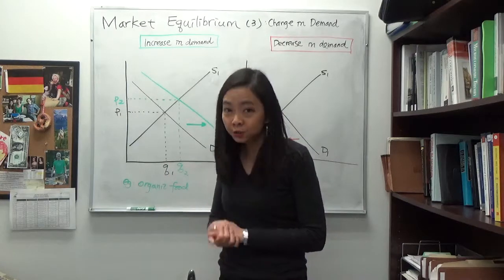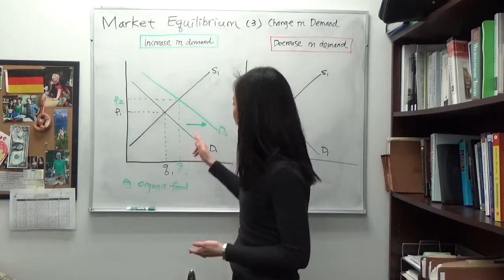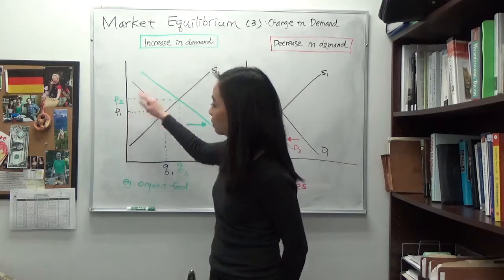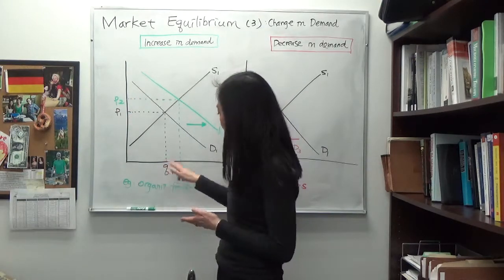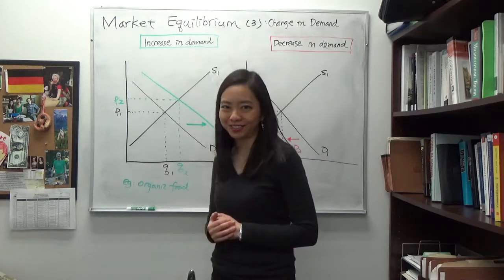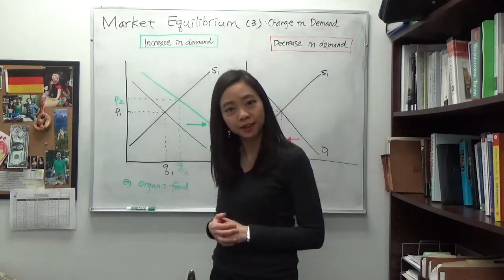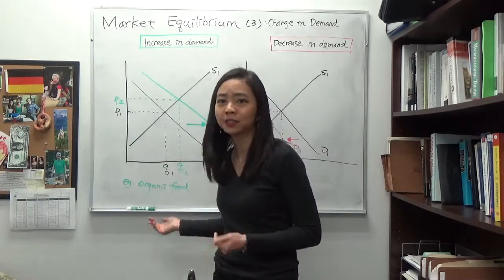So you can see that when there is an increase in demand, that is going to shift our demand curve to the right, which will increase our equilibrium price, and it will also increase our equilibrium quantity. That's what happens to our market equilibrium when there is an increase in demand.